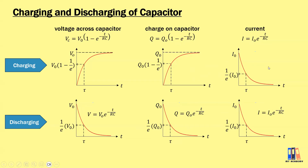I want to highlight the six graphs for the three variables across two processes. First, the increasing pattern is observed for voltage and charge during the charging process — the formula is V₀ multiplied by (1 − e^(−t/RC)), similarly for charge. The other four graphs show a decreasing pattern: the current during charging is I₀ × e^(−t/RC), same form for V, Q, and I during the discharging process.